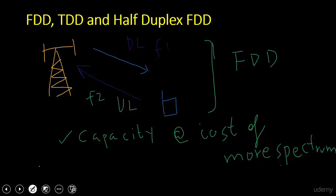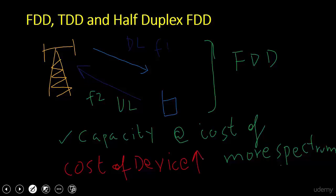Another cost is that the device will be more expensive in the FDD scenario, because the device needs to have a duplexer filter installed to process both uplink and downlink simultaneously, which raises the cost of the user equipment.